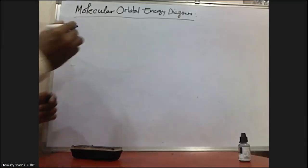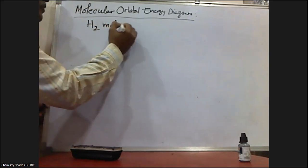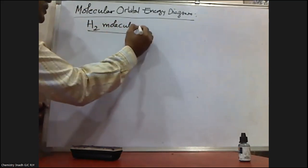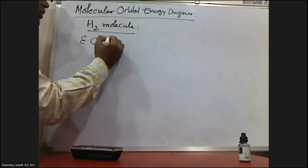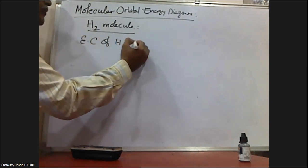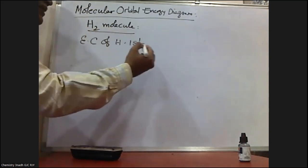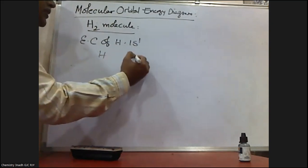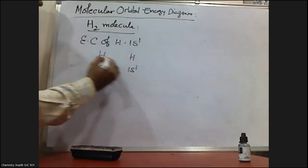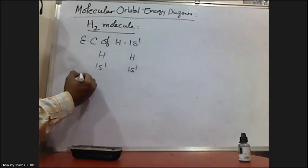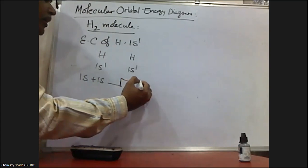First, let me discuss the formation of the H₂ molecule. We know that the electronic configuration of hydrogen is 1s¹, and similarly for the second hydrogen atom, it is also 1s¹.